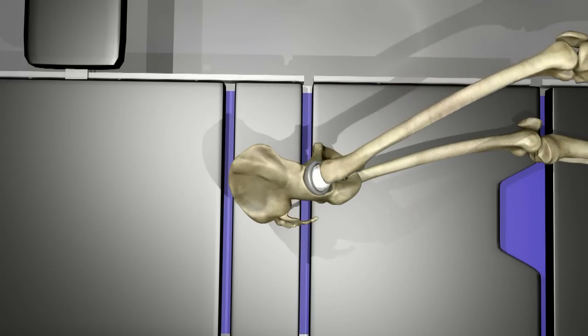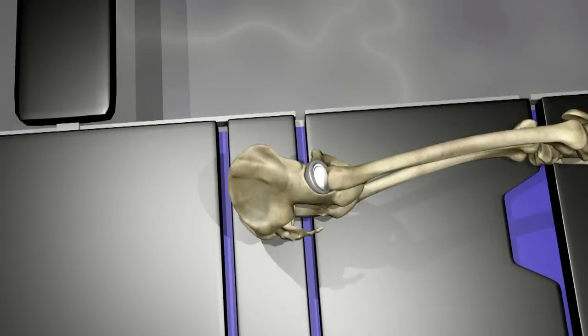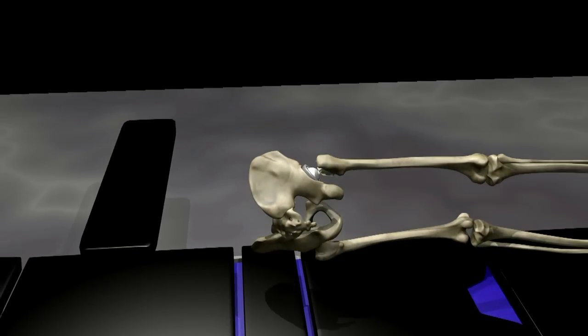The muscles surrounding the hip are repaired with sutures. The skin can now be closed with sutures or staples.